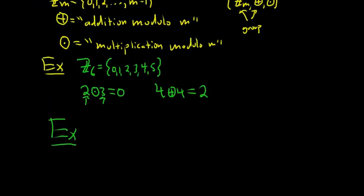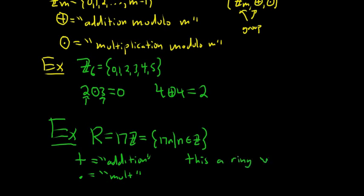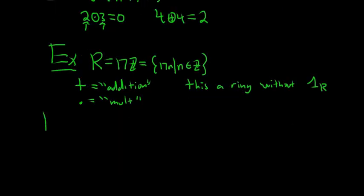Here's an interesting ring: let R equal 17Z, all the multiples of 17 — that is, 17n such that n is an integer — with regular addition and multiplication. This is a ring, but it does not have a multiplicative identity. It has an additive identity, which is zero, but there is no multiplicative identity.